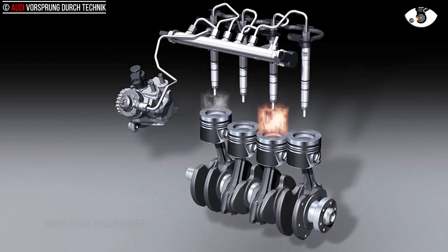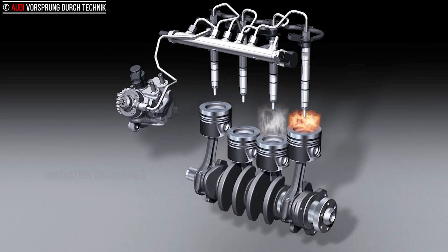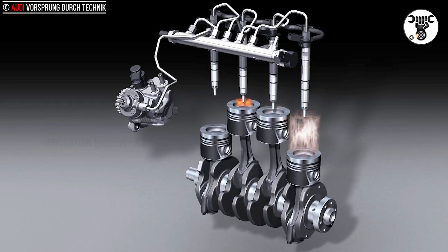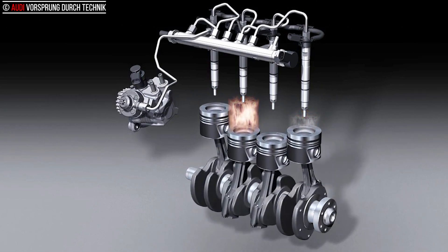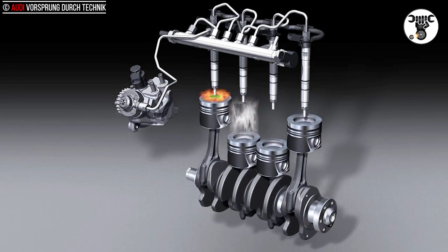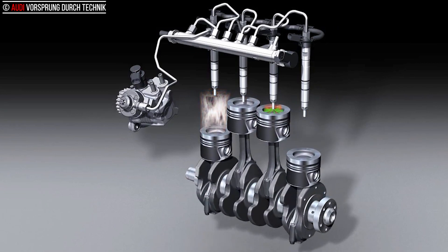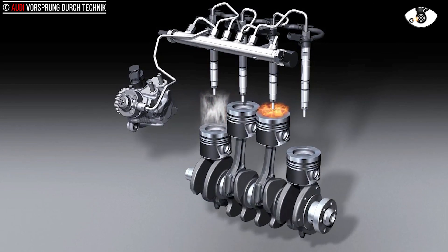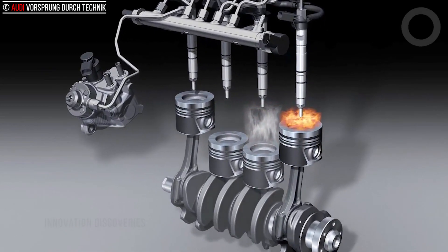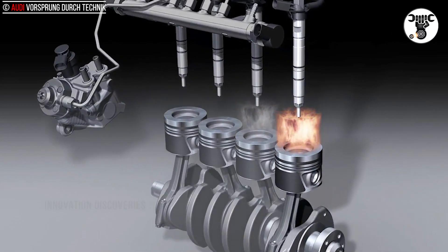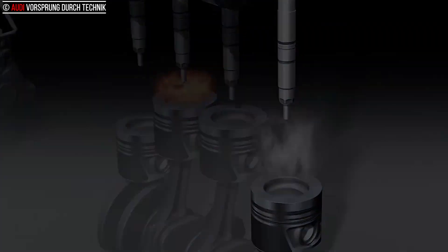Common rail systems currently achieve system pressures of up to 2000 bar — 2908 pounds per square inch. They normally work together with a fuel pre-delivery unit. For its latest generation common rail system, Audi uses a high-efficiency, non-contact volumetric flow controlled pump in the tank.